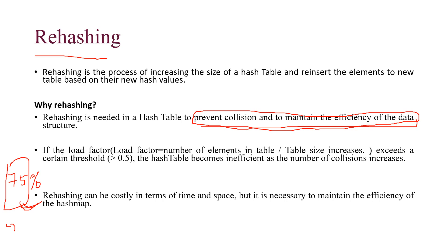Now, how do we decide that the table is 75% filled? That is decided by the load factor. The load factor is the number of elements in the hash table divided by the table size. If the load factor is greater than 0.5, then we perform rehashing.